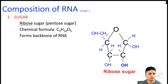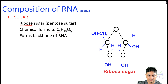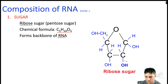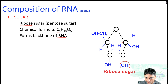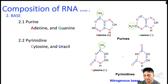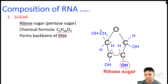The first component of RNA is sugar, and it is made up of ribose sugar, which is a pentose sugar with the chemical formula C5H10O5. It forms the backbone of RNA. Looking at the pentose sugar structure, unlike deoxyribose sugar in DNA, at carbon number two there is a hydroxyl group. This is the key difference between the sugar of DNA and RNA — the ribose sugar has a hydroxyl group at the two-carbon position.